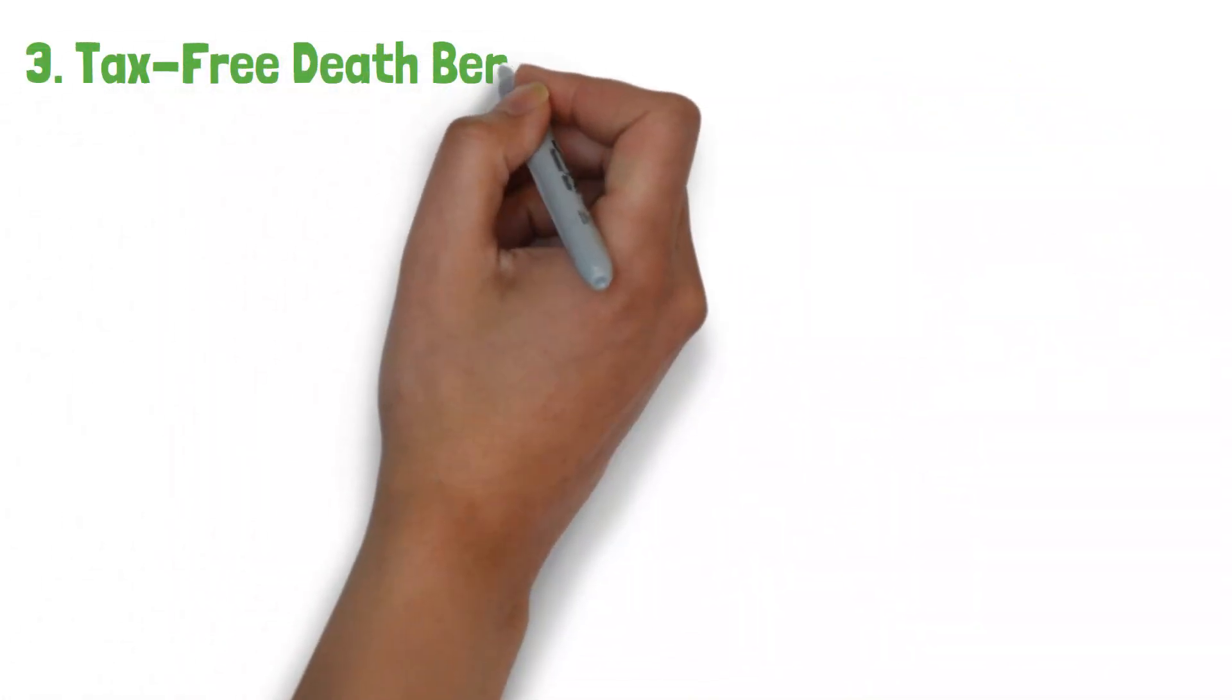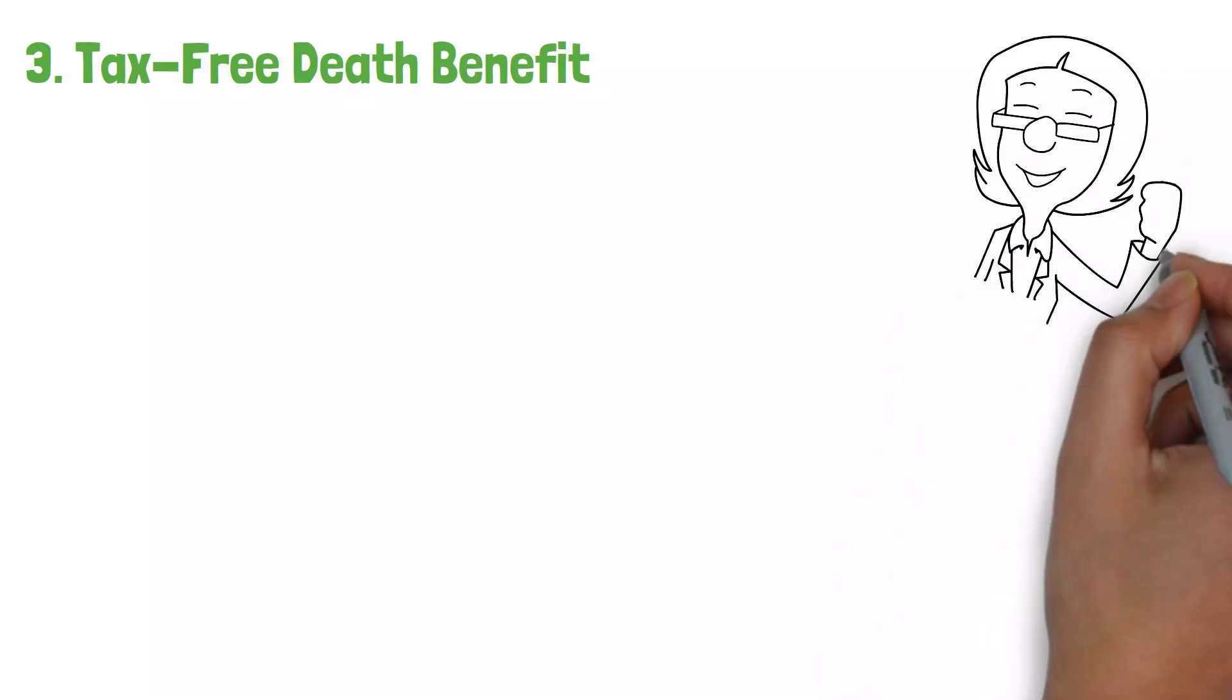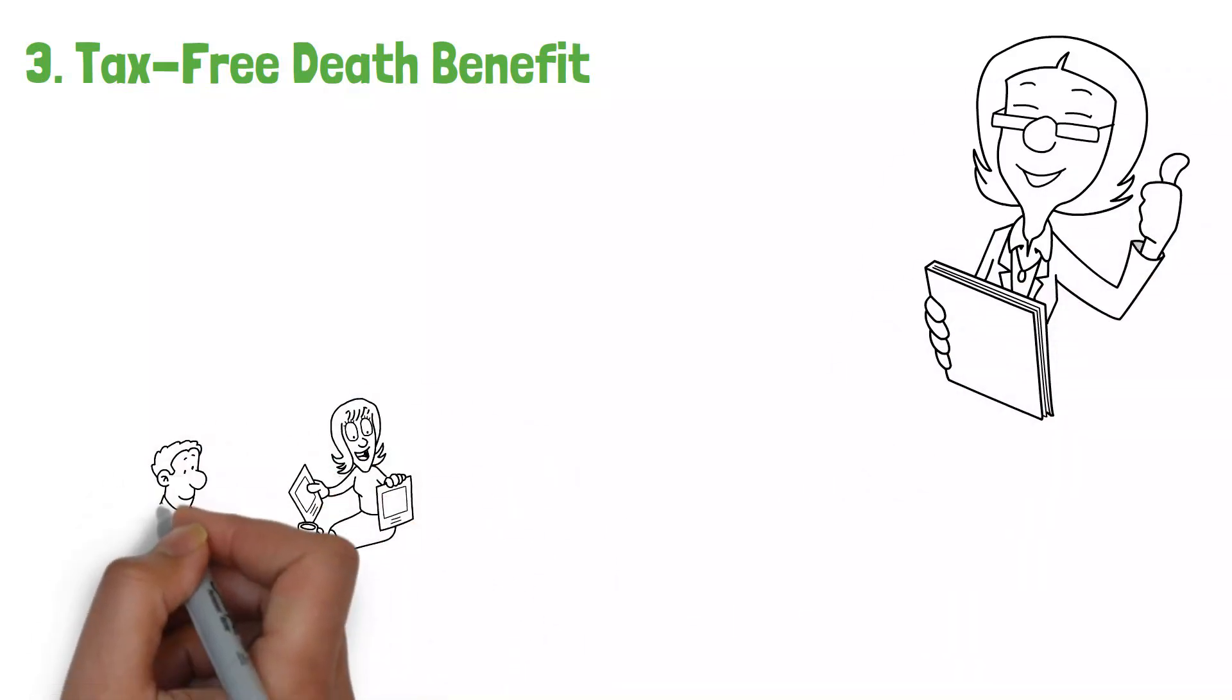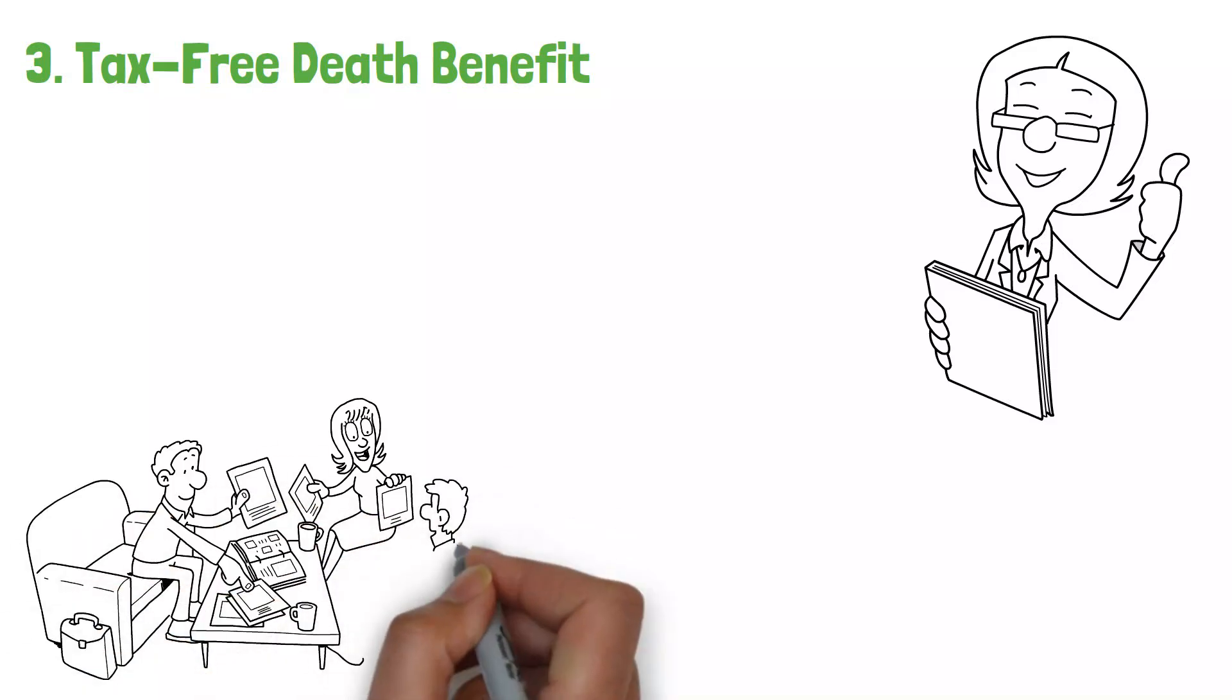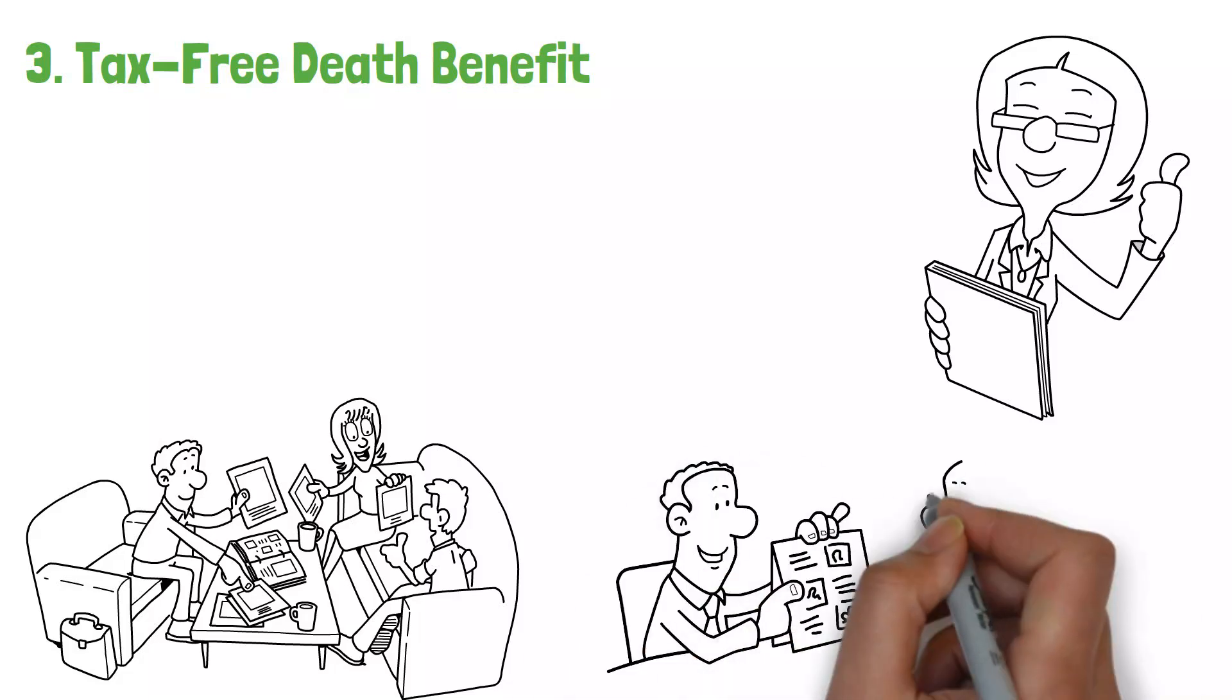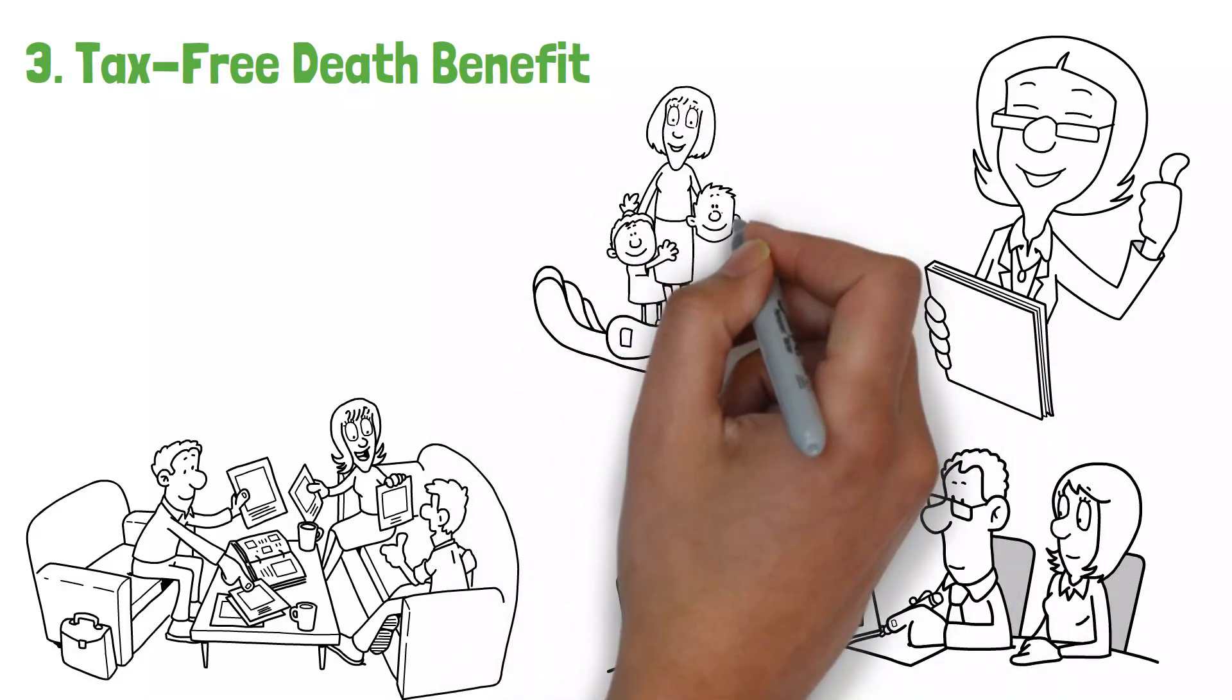3. Tax-Free Death Benefit. One of the most appealing aspects of life insurance is the tax-free death payout. When the insured dies, the death benefit is given to the beneficiaries without regard to income tax. This feature makes life insurance a valuable instrument for estate planning and asset transfer, ensuring that your loved ones get the full benefits of your coverage.